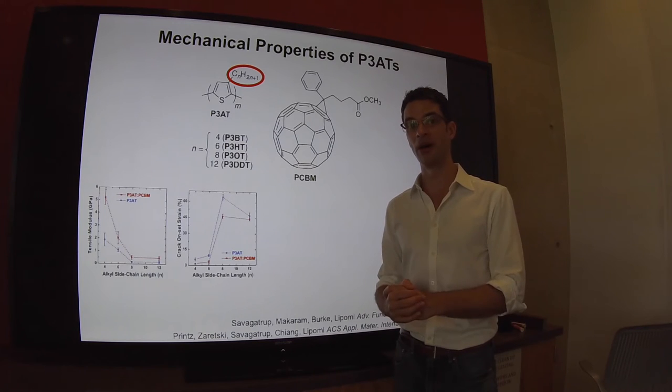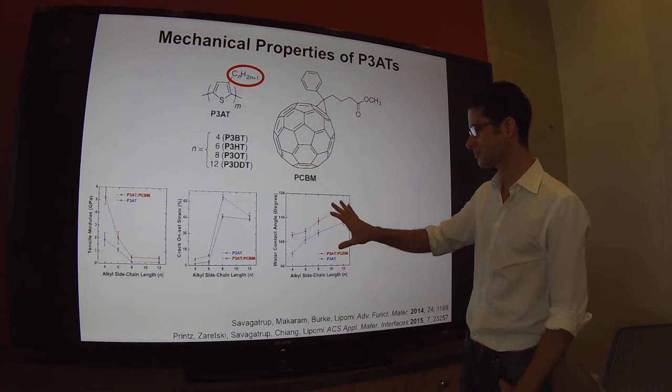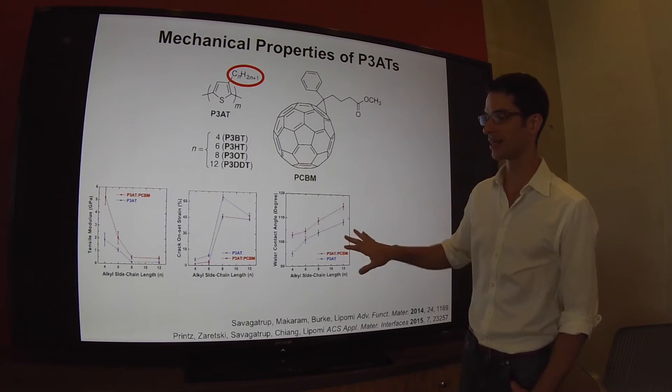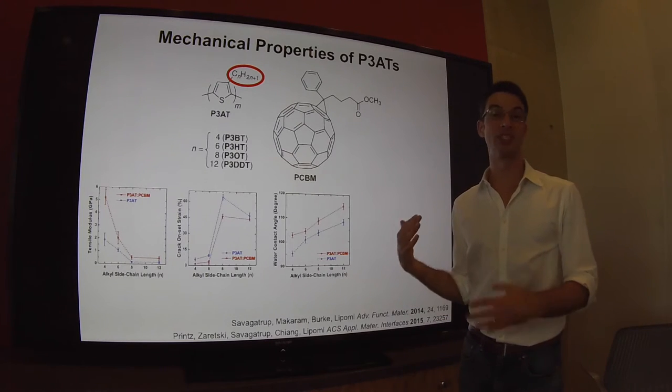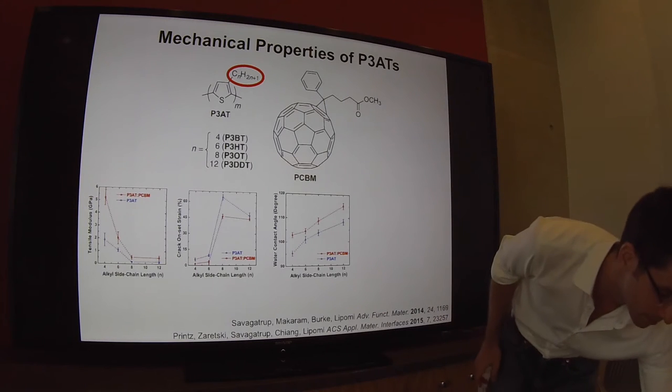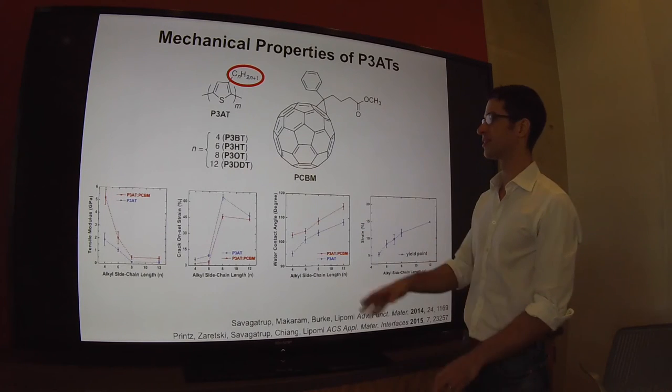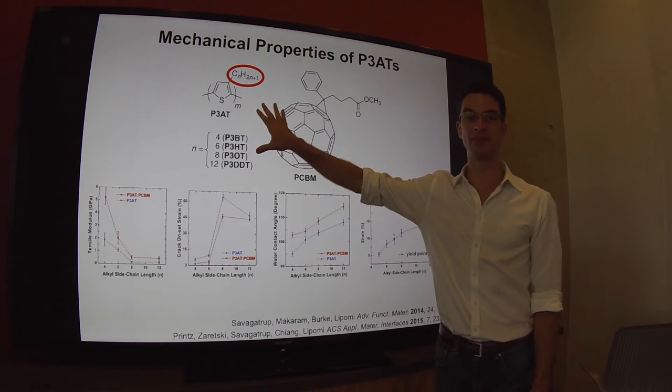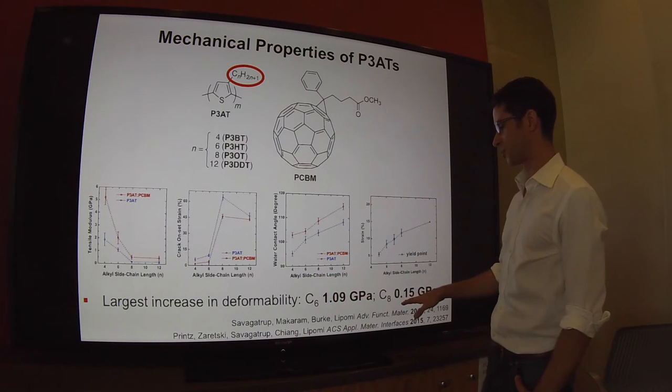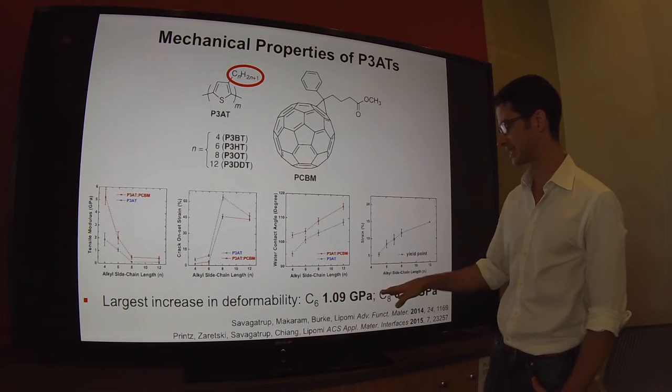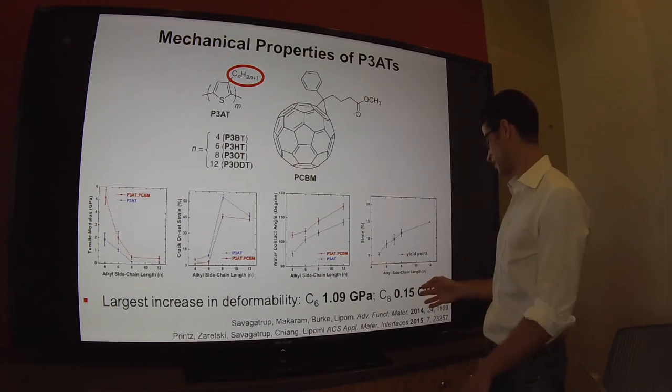We don't think this is actually a real effect on the material. We think this is because the adhesion of the film with the substrate decreases as you increase the length of the side chain—it becomes more hydrophobic. This is consistent with the fact that the water contact angle increases as a function of the alkyl side chain length, which is indicative of poorer adhesion. If you look at the strain at which yield occurs, we see an increase in yield point. The largest increase in formability occurs between the C6 to C8 transition.